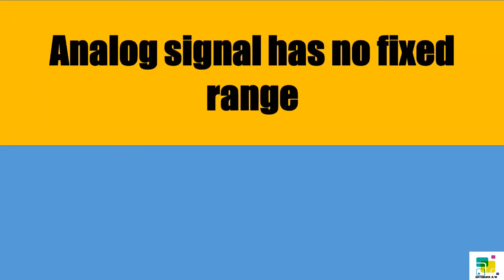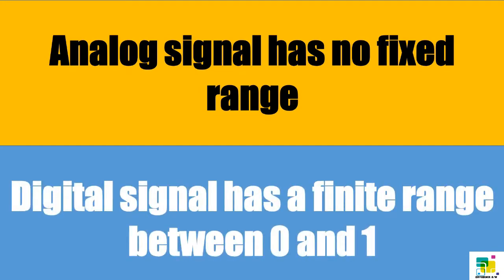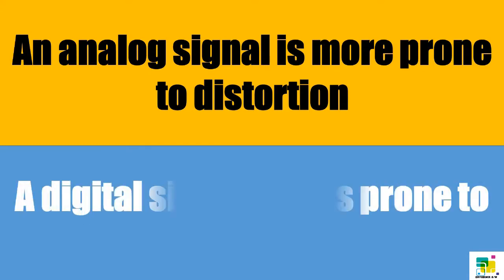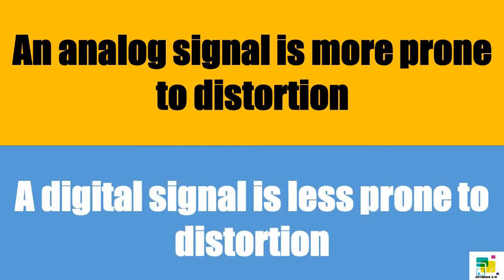Analog signal has no fixed range, and digital signal has a finite range between 0 and 1. Analog signal is more prone to distortion, but a digital signal is less prone to distortion.